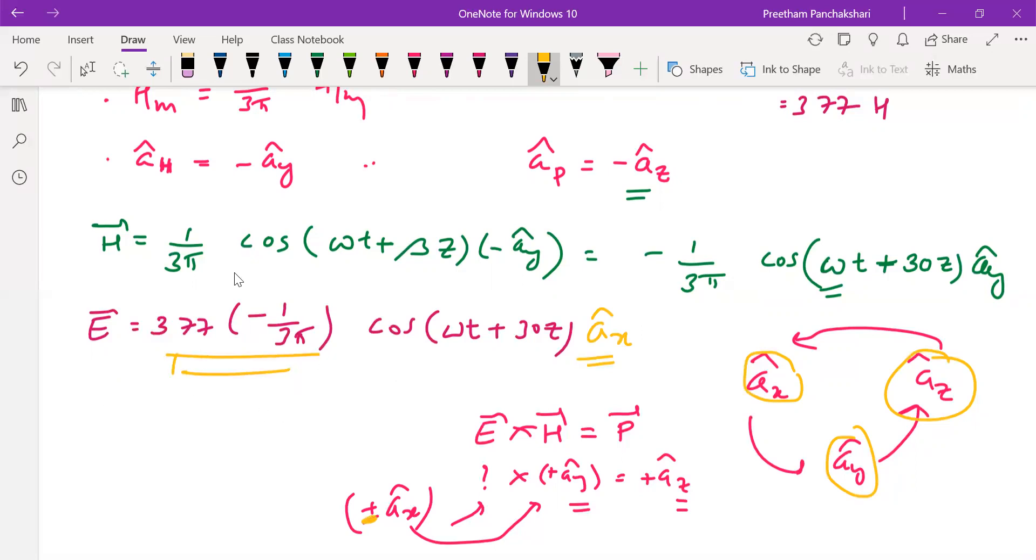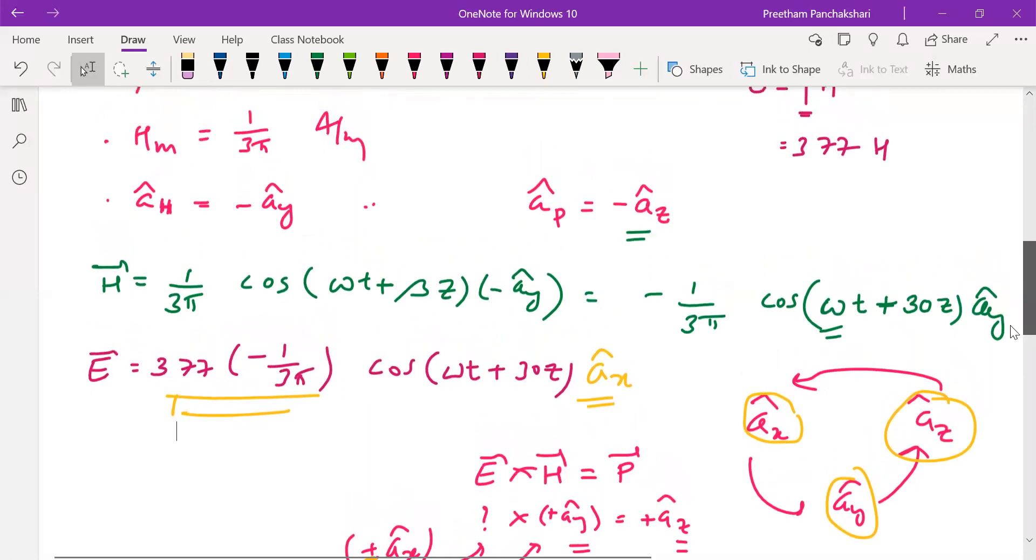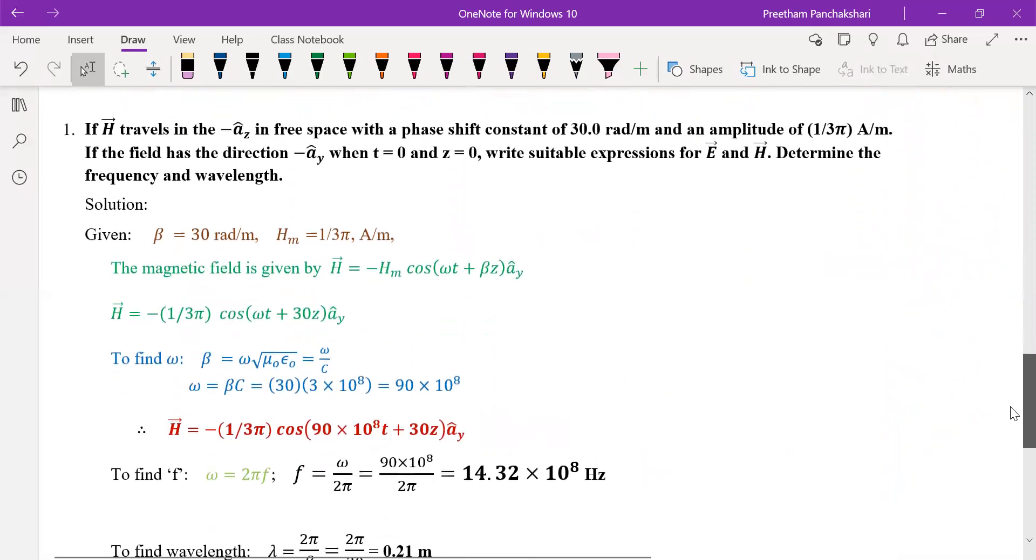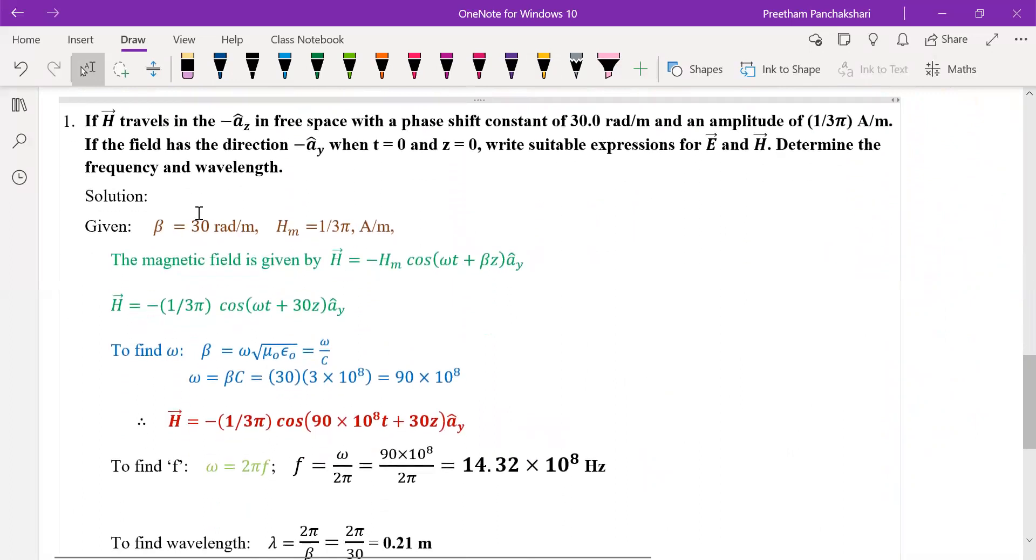We can compute this amplitude using calculator. So let me summarize the complete problem with the answers. So look into the solution. Now the same problem here. Beta is given as 30 and amplitude is 1 by 3π. We have implemented here and direction of H is minus Ay, minus is taken to amplitude 1 by 3π.